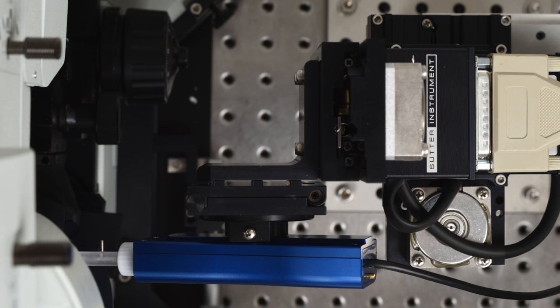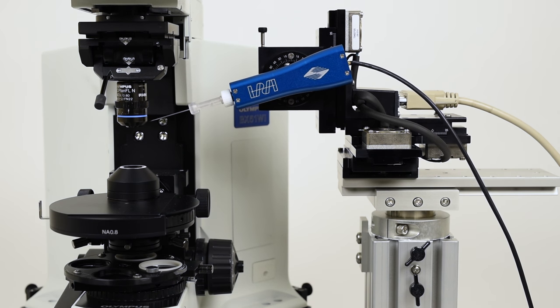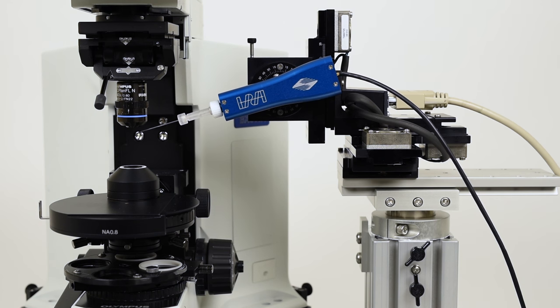The right angle adapter will give the manipulator an added one and a half inches or about 40 millimeters of added reach. This allows you to move the manipulator farther away from the microscope and still be under the objective. By turning the manipulator 90 degrees, it is now free to operate without obstructions in its path.